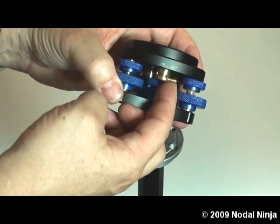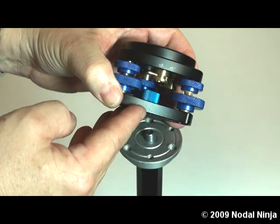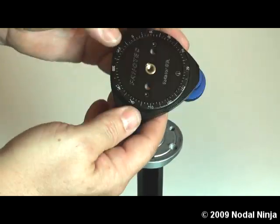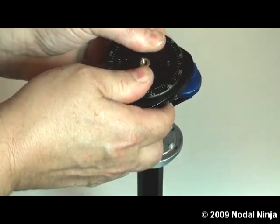Move that brass lever to the left and that will engage the 45-degree detent stop. So now your rotator will rotate and click every 45 degrees of rotation.